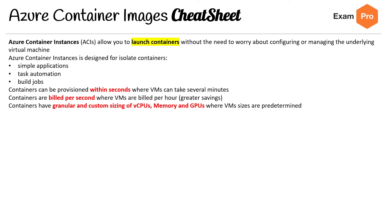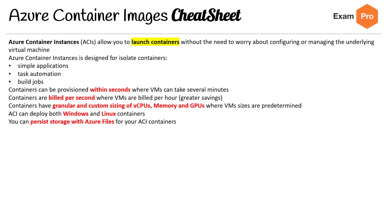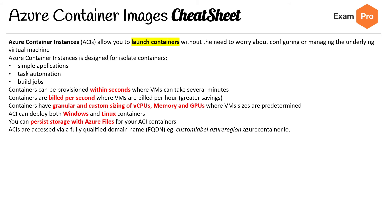Containers have granular and custom sizing for vCPU, memory, and GPU, whereas VM sizes are predetermined. ACI can deploy both on Windows and Linux, you can persist storage with Azure Files, and ACI is accessed via fully qualified domain names — so it's just like a domain name.